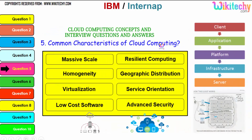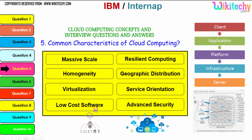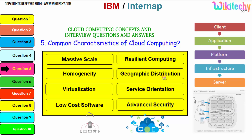Let's talk about the common characteristics of cloud computing. These are very important characteristics: massive scale — it can be as big as you need; homogeneity; virtualization — you can create a virtual machine and use it; low cost software — it becomes really cheaper; resilient computing — processing is done remotely without disturbances; geographic distribution — data and computing processes are geographically distributed; service orientation — it is based purely on service orientation; and advanced security.